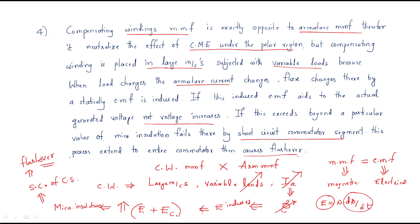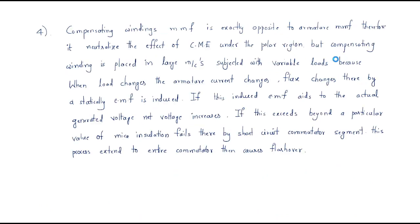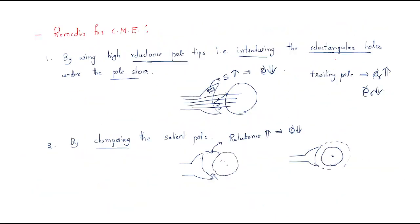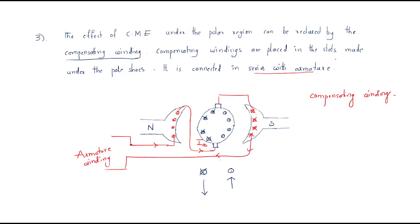That is why compensating winding should be used only in large machines subjected to variable loads. For all other cases, it is not applicable and can cause serious problems. These are the important remedies regarding the cross-magnetizing effect.